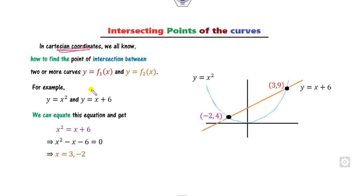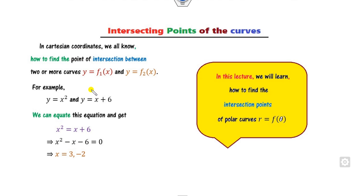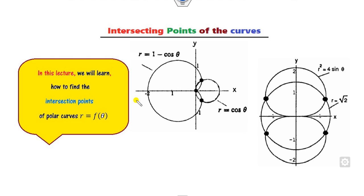But the question arises: how can you find the intersection point of the polar curve? Because the polar curve is represented in the form of r and θ. So if I draw these two curves, how can you find the points of intersection? That will be the interesting topic of today's lecture.